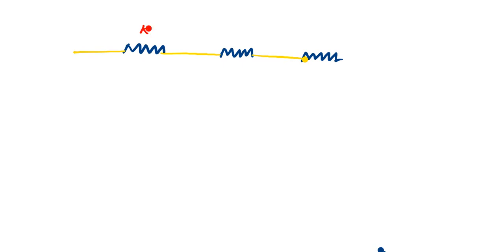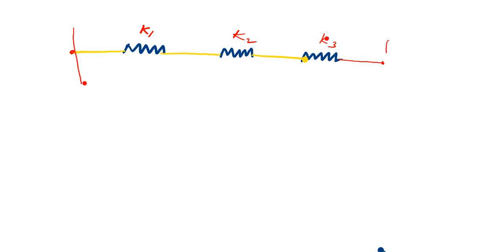Let me take one problem on the spring element. There are three springs: spring 1, spring 2, and spring 3, connected in series. The stiffness element matrix will be like K1, K2, and K3. At the end, it will be rigidly fixed.